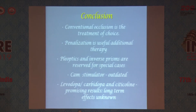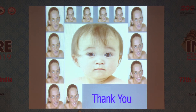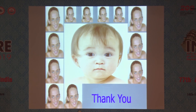In conclusion, conventional occlusion is the treatment of choice. Penalization is a useful additional therapy. Pleoptics and inverse prisms are reserved for special cases. CAM stimulator is outdated. Levodopa and citicoline have shown preliminary results but are used as adjuncts. Our society, SPOSI, and pediatric ophthalmology groups are working hard to make vision certificates mandatory for school children — like vaccination certificates — so that amblyopia risk factors can be detected and treated early, ensuring all children are cured.